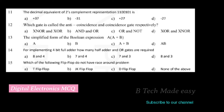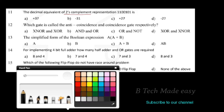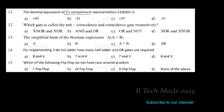To find the decimal equivalent of the two's complement representation, we look at the number: 1, 1, 0, 1, 0, 1.